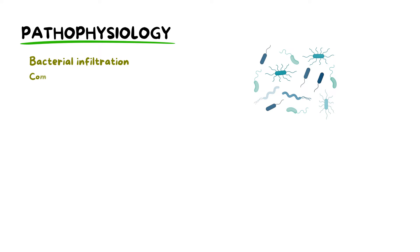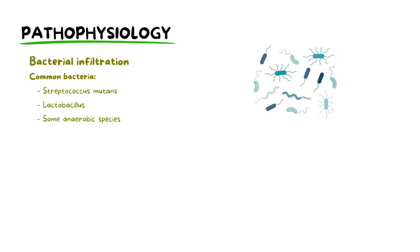How this develops is through bacterial infiltration, notably by pathogens such as Streptococcus mutans, Lactobacillus, and anaerobic species. This occurs through carious lesions or fractures within the teeth. The microbial invasion triggers an inflammatory cascade, resulting in heightened pressure within the pulp chamber and the manifestation of pain or symptoms.